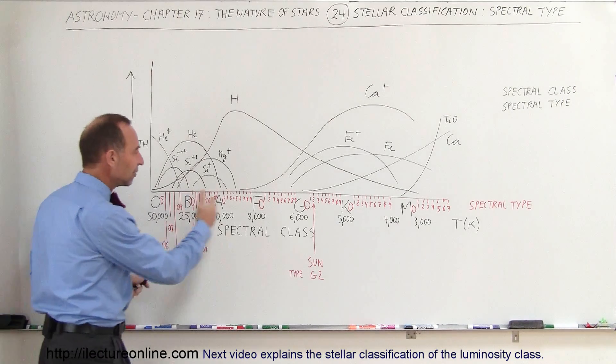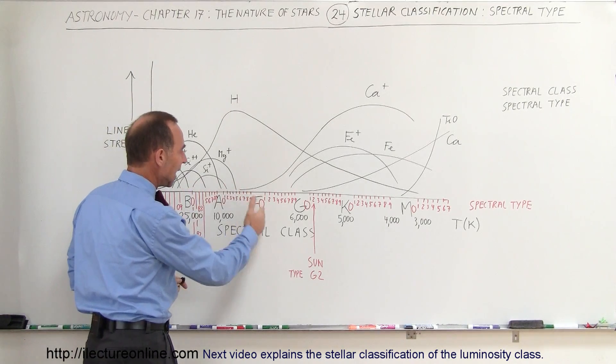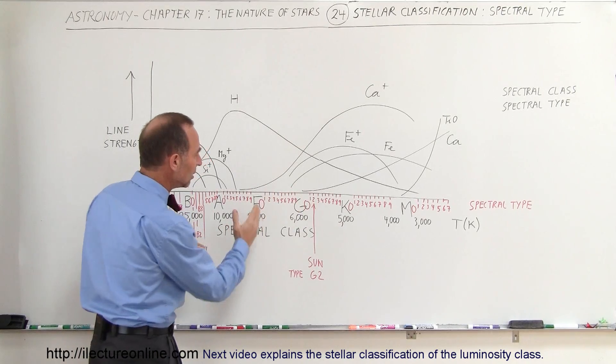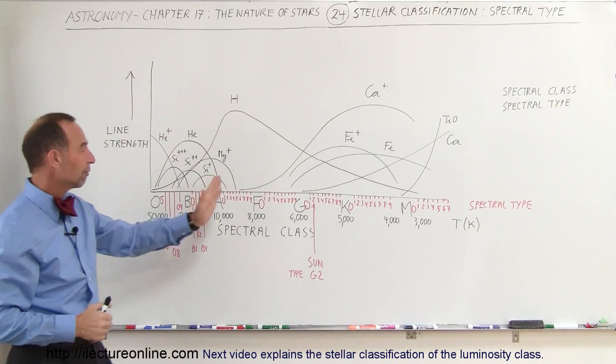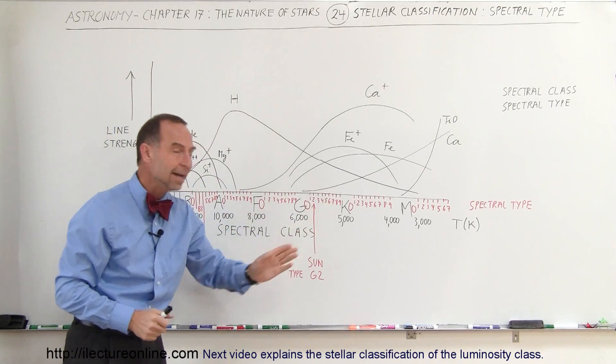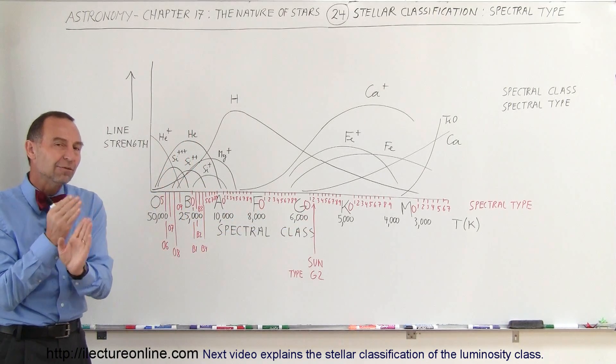But you can see that there's a lot of variation between B, A, F, G. There's a lot of space in between. You can see how the spectral lines do change considerably, going from F to G, and from G to K. And so we want to be able to identify that even more accurately.